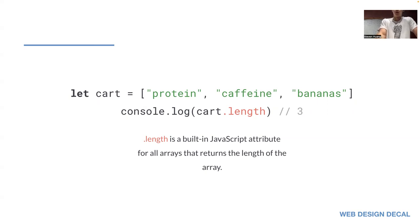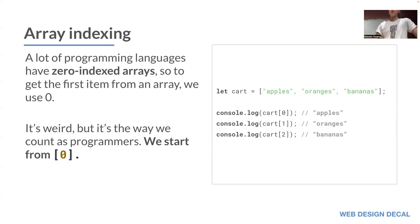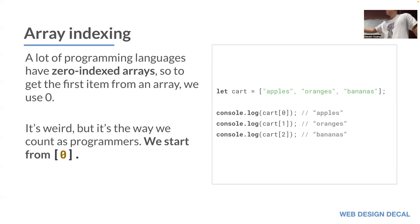Array indexing is a bit tricky. In computer science, arrays are zero-indexed, so the first element is accessed with cart[0]. If you want the third element, bananas, you subtract one and use cart[2] to get it. This is how you access things in an array — put the array name, then brackets, then whichever index you want. So apples is 0, oranges is 1, and bananas is 2.